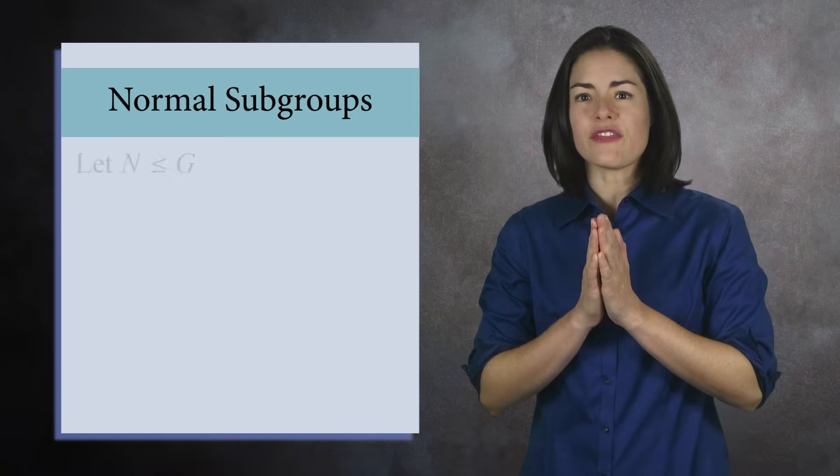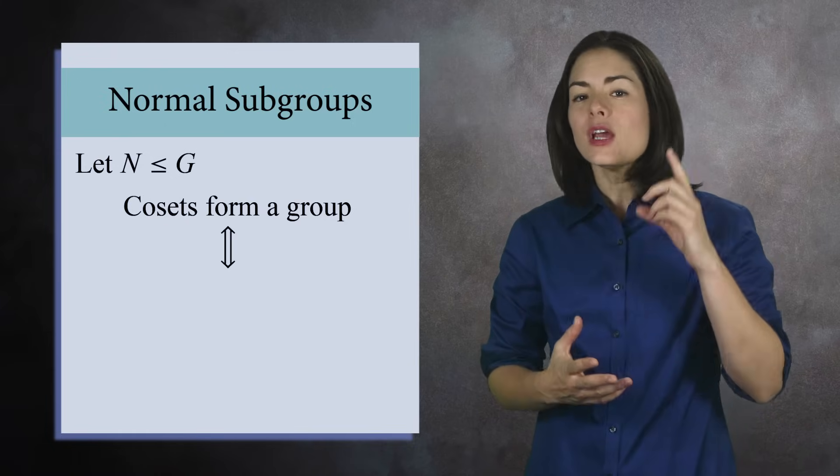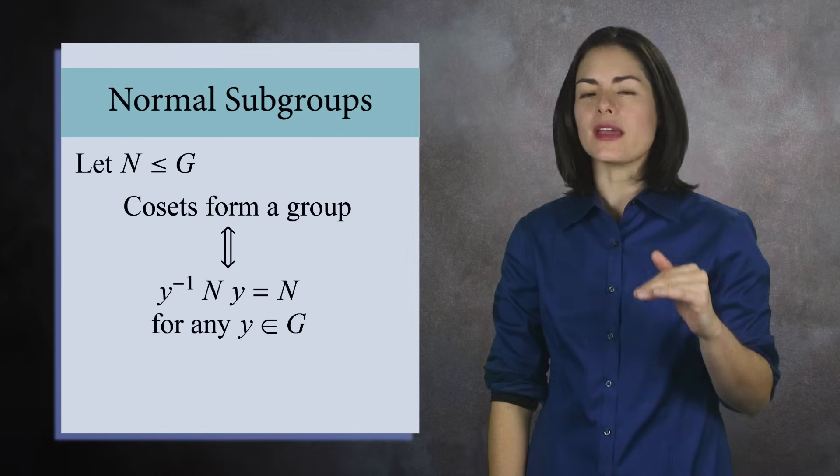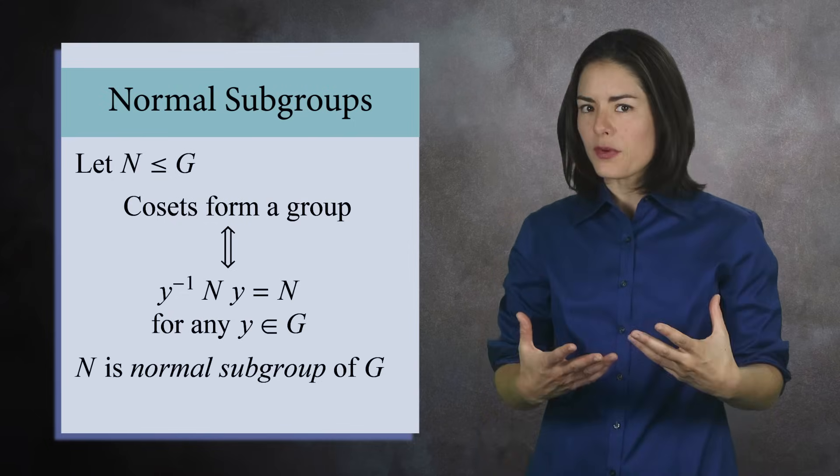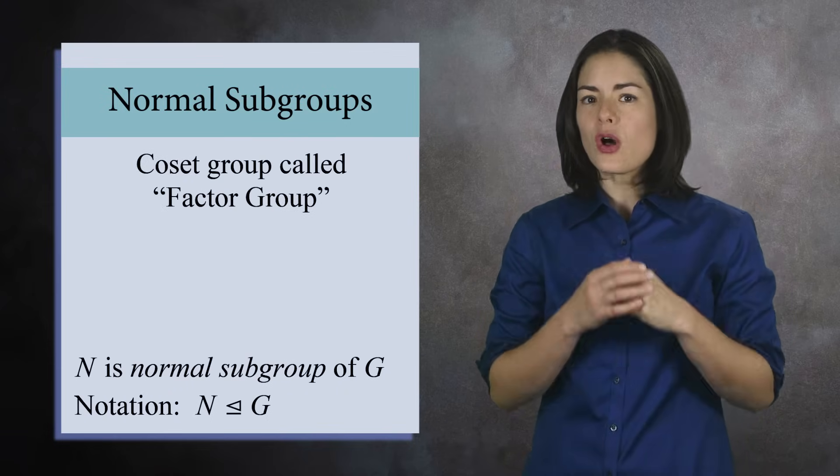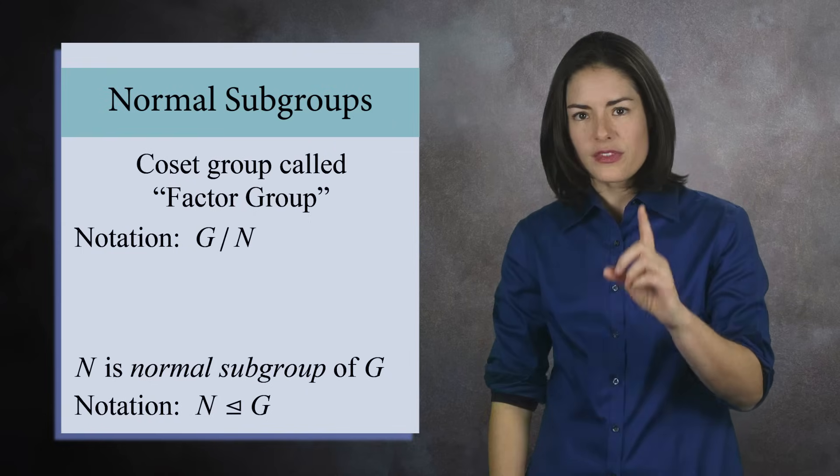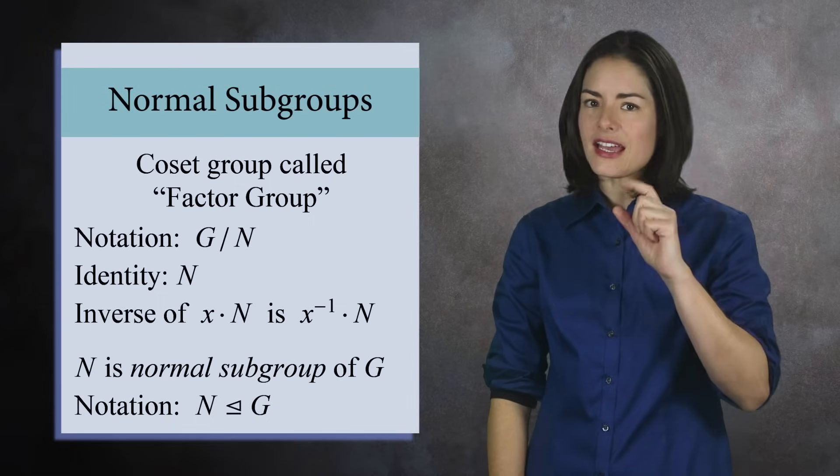What we've just shown is that if N is a subgroup of G, then the cosets behave like a group precisely when y inverse times N times y equals N for any element y in the group. When this is true, we call N a normal subgroup of G. And we write it like this. The group of cosets is called a factor group and it's written like this. In the factor group, the subgroup N is the identity element, and the inverse of xN is x inverse N.